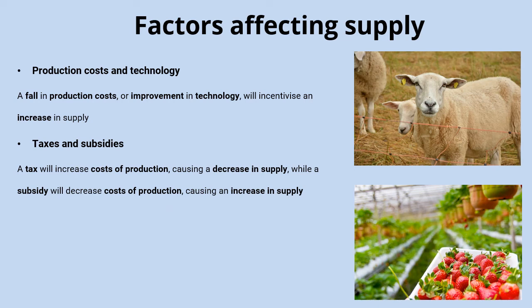Government policies are also going to have an impact. An increase in taxes will increase costs of production and lead to a decrease in supply — for example, if the government increased taxes on lamb production, farmers would find it less profitable and might produce more beef instead, causing supply of lamb to fall. Conversely, if the government subsidized lamb production, that would decrease costs and incentivize farmers to supply more at any given price.